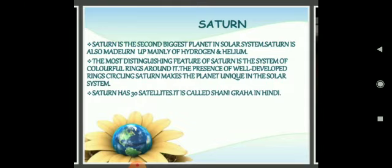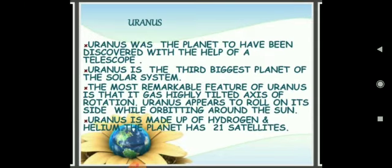Uranus was the first planet to have been discovered with the help of a telescope, and it is the third biggest planet of the solar system. Uranus has a strange spin — like Venus, it also rotates from east to west.